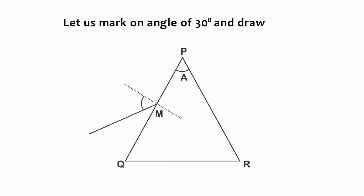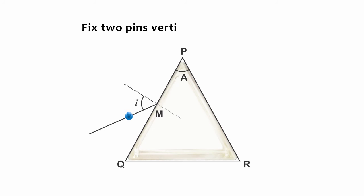Let us mark an angle of 30 degrees and draw a line AB at M, which gives the incident ray. The angle of incidence is I. Fix two peans vertically on line AB.